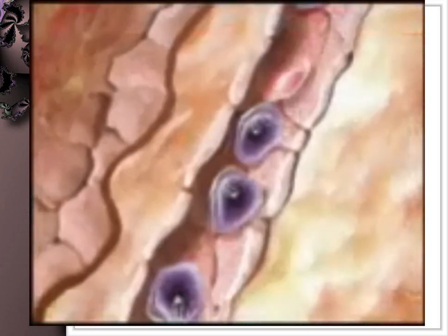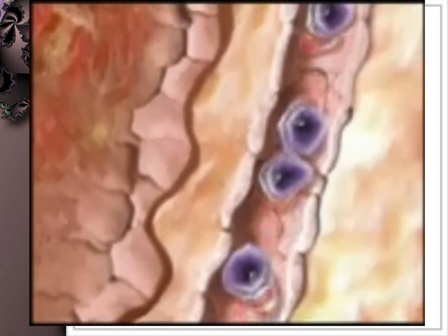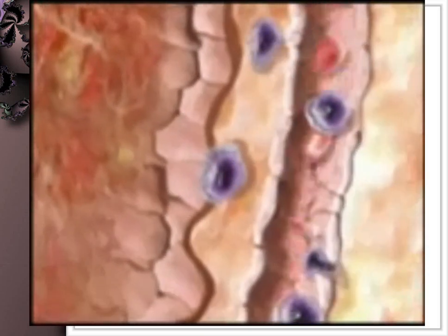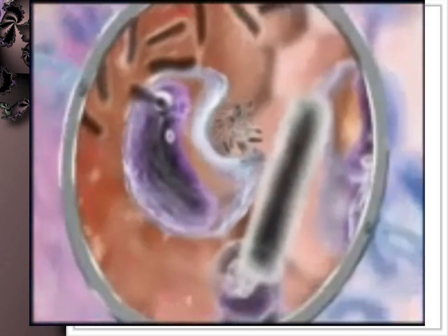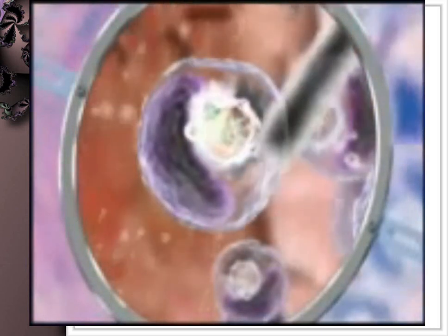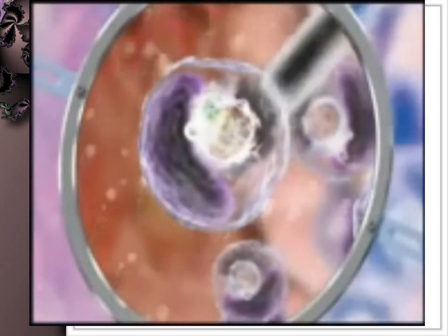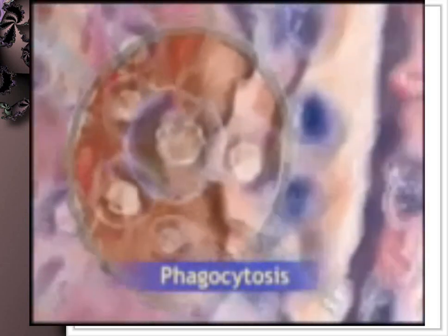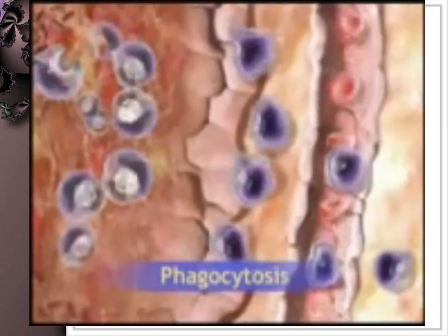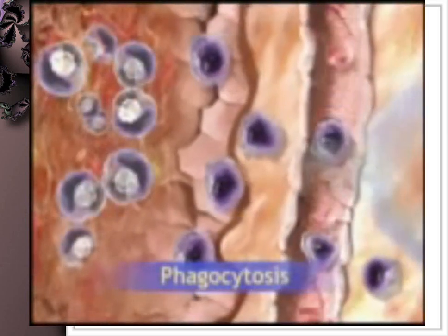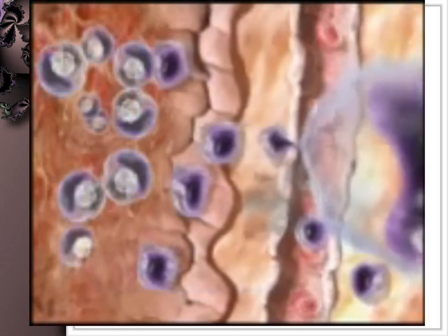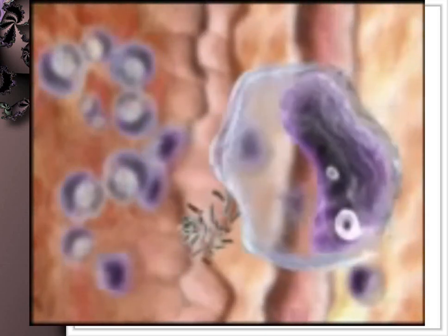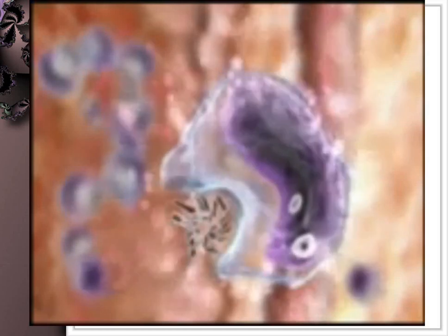Phagocytic white blood cells, or leukocytes, emigrate through the vessel walls into the inflamed tissue, where they engulf and degrade bacteria and cellular debris in a process called phagocytosis. Phagocytosis is part of the immune mechanism to prevent infection that would impair wound healing. Subsequently, the release of growth factors leads to the attraction of fibroblasts.